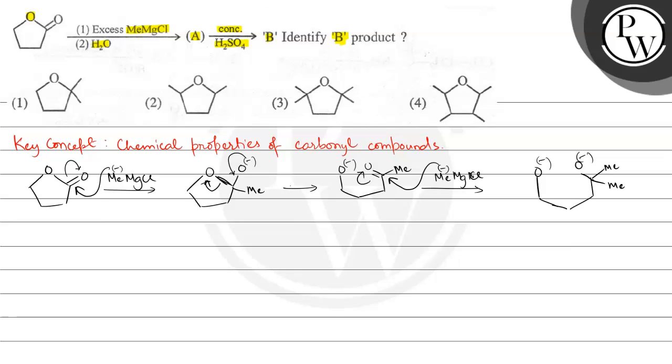Now O minus is coordinated with MgCl plus. This is coordinated with MgCl positive and this is also coordinated with MgCl positive.